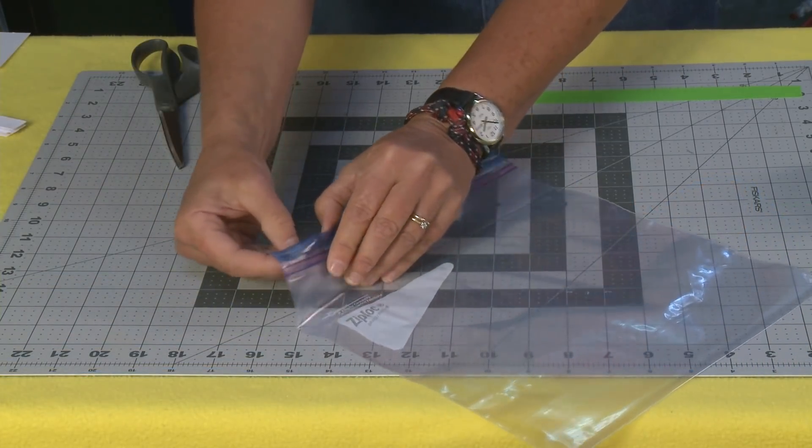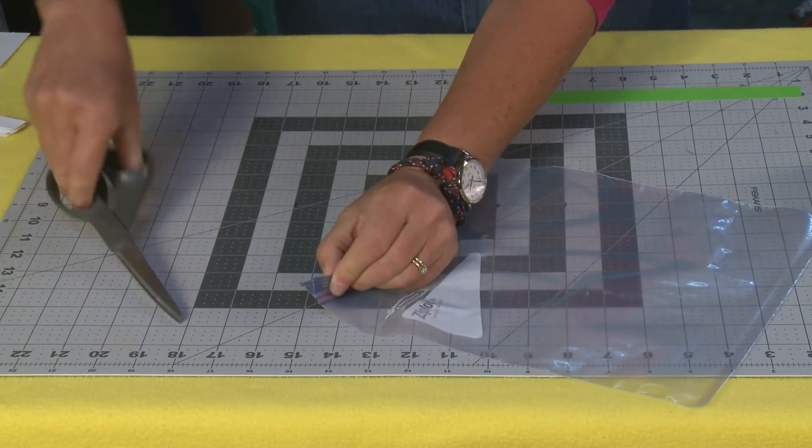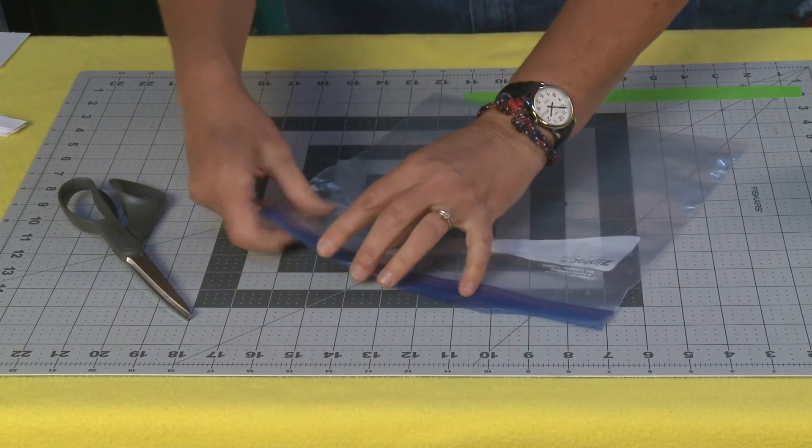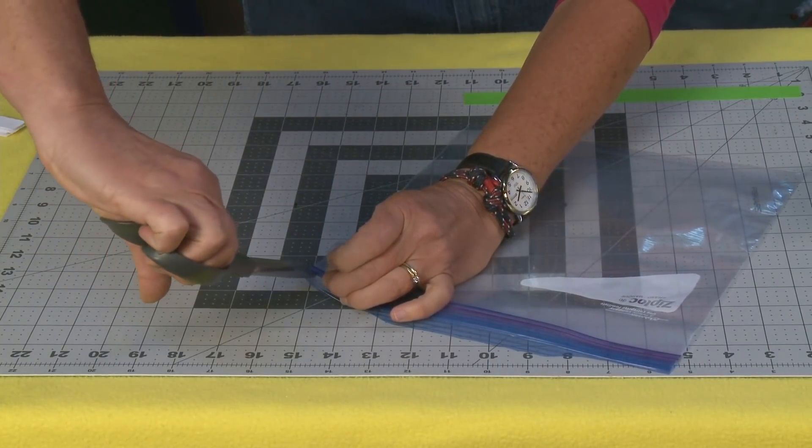See how the Ziploc bag is sealed here on the end? I'm going to take my scissors and I'm just going to snip that right there so that opens up now. This is just going to make it easier for the next step. So I'm just going to snip both sides.